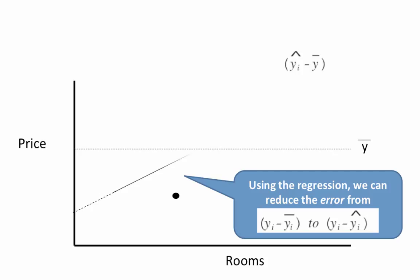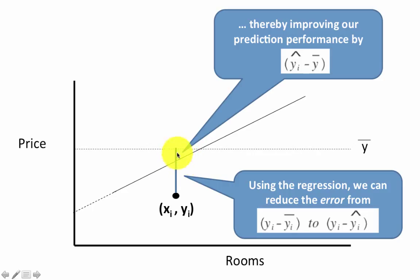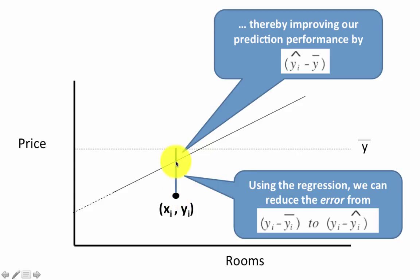With the regression, we can reduce the error from y-i minus y-bar to y-i minus y-hat. Hat is usually used as the symbol for the predicted value. For a particular household, if you have the regression model — the line — the predicted value is y-hat, while the actual value is y-i. So earlier the error was y-i minus y-bar, that is the distance from the point to the mean. But now the error is only y-i minus y-hat. We improved our prediction performance by y-hat minus y-bar.